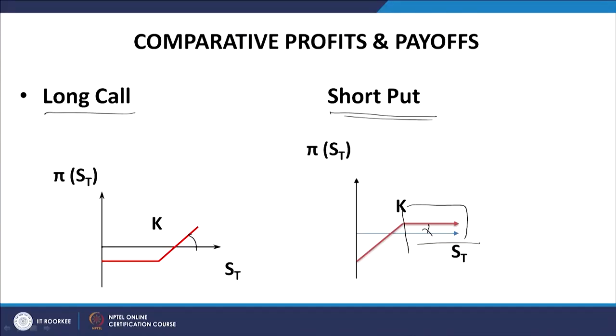What is actually happening is it is a kind of passive situation, whereas in the case of a long call we have an active situation where the price increase is mirrored in the profit profile. In the case of a short put, the profit arises from the non-exercise of the option by the party who has bought the option. If the price is higher, the party who is long in the put option would rather sell in the market; therefore the put option will expire worthless and the party who is short will pocket the premium. It is a default situation rather than by design.